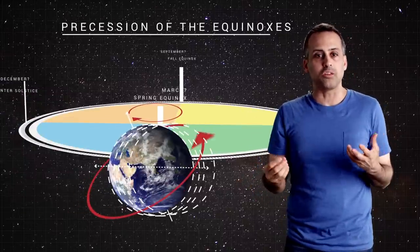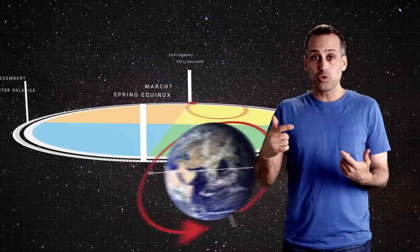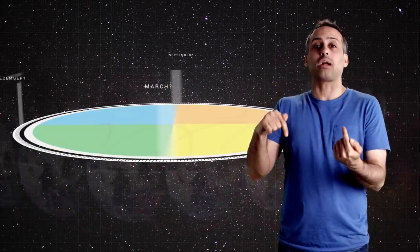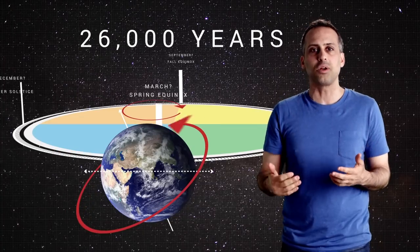And if you need help visualizing things, just stick a toothpick in an orange and move it around in 3D until things click for you. Eventually, the cycle of seasons will backtrack a full 360 degrees, returning to its starting point. That'll take a little less than 26,000 years.